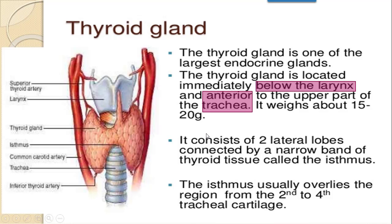The thyroid gland has two lobes — one lobe and another lobe — and both lobes are connected by a narrow band of thyroid tissue. This narrow band is called the isthmus. The isthmus runs from the second to the fourth tracheal cartilage. So these two lobes are connected through thyroid tissue called the isthmus, located below the larynx and anterior to the trachea.